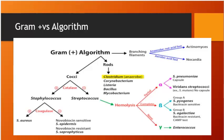Clostridia are anaerobes classified as C. tetani (causes tetanus), C. botulinum (bad bottles/babies — flaccid paralysis), C. perfringens (gas gangrene, especially in diabetics; if it affects the scrotum and perineal area it's Fournier's gangrene — requiring wide excision, antibiotics and hyperbaric oxygen), and C. difficile (most commonly associated with ampicillin and clindamycin; treatment is metronidazole and vancomycin).